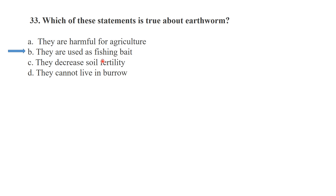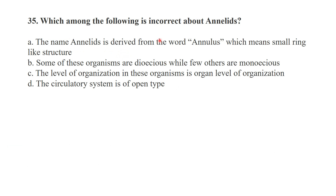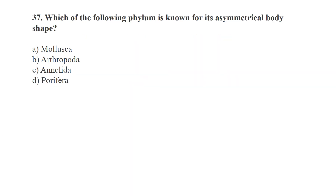Which statement is true about earthworms? They are used as fishing bait. Which statement is incorrect about arthropods? Some arthropods are dioecious and some are monoecious — the incorrect statement is that they are only dioecious. Regarding Annelata: the circulatory system is closed, not open. Arthropods excrete through Malpighian tubules.